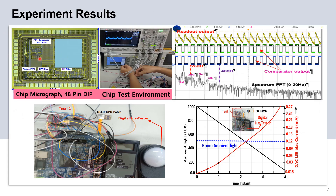Experiment results: This is the chip micrograph. This is the chip test environment. This is the output PPG signal from the readout circuit. This is the PPG signal converted to the pulse signal to control the OLED driver switch on and off.